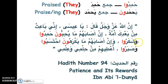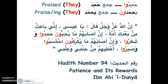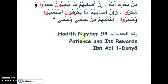I colored the waw since we learned it means 'and'. 'Wa shakaru' — 'shakara' means 'he thanked', 'shakaru' is 'they thanked' in the past. 'Yakrahoon' — 'yakrahu' means 'he hates', 'yakrahoon' is 'they hate'. The concept is clear: waw-alif for past plural, waw-noon for present plural. This is hadith number 94 from the book 'Patience and Its Rewards' by Ibn Abi al-Dunya.